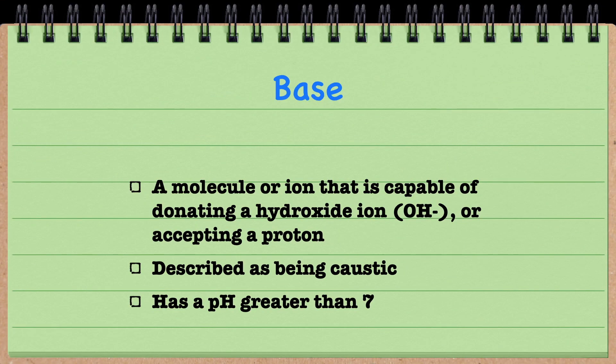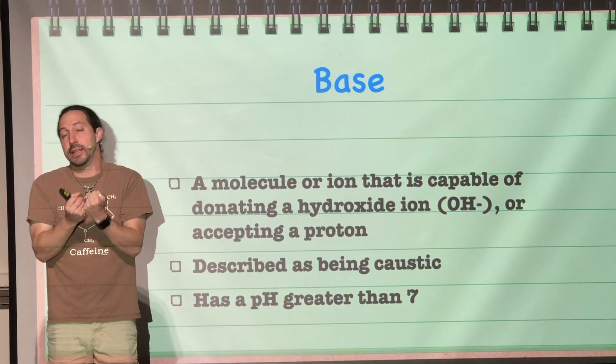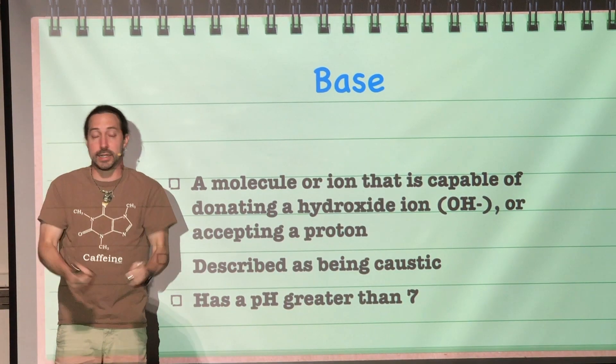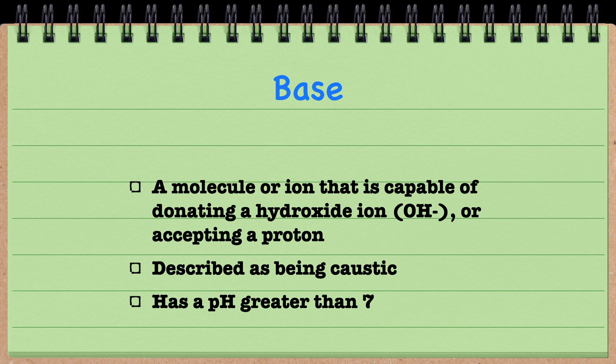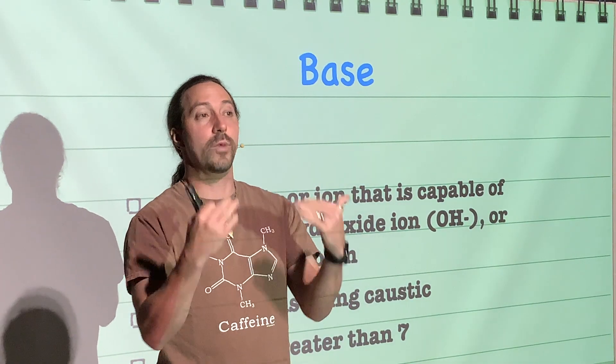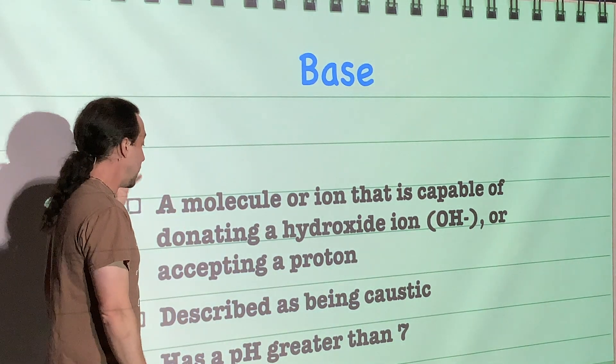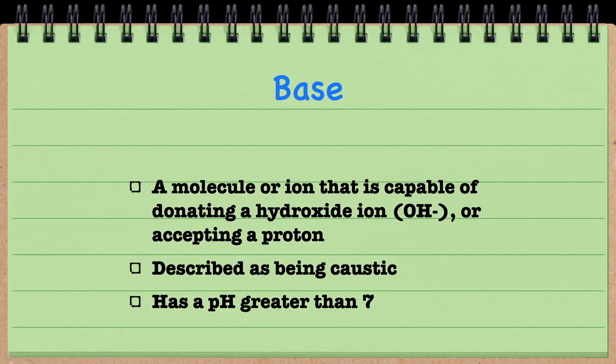Bases, on the other hand, they are capable of donating a hydroxide ion or they accept that hydrogen ion that could have been donated from an acid. Either way, they are the opposite, or doing the opposite of what an acid does. They will decrease the hydrogen ion concentration within a solution. And thus, they can be described as being caustic, and they would also have a pH that is greater than 7.